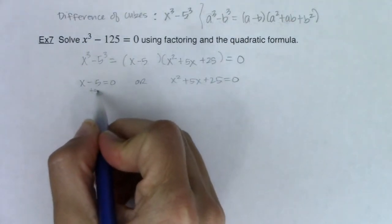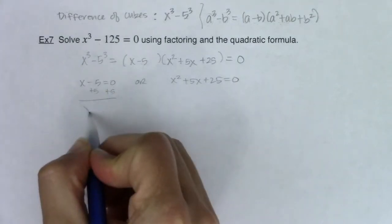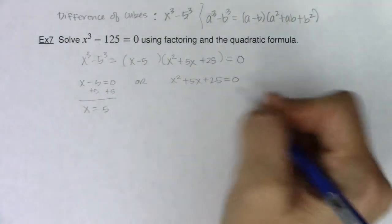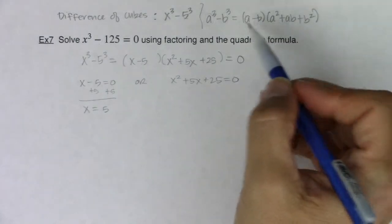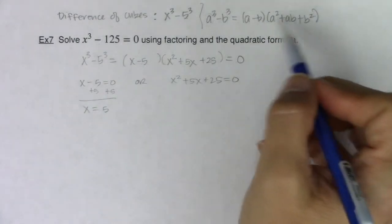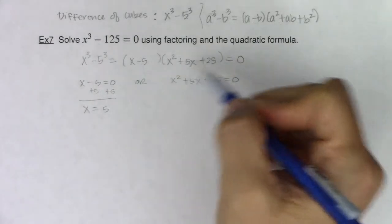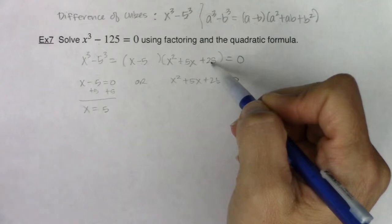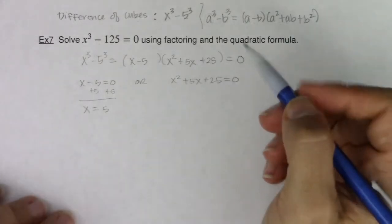Well, this one's not too bad. I'll just add the 5 to both sides, and there's one of my solutions. Here, again, I can't factor it. You've already used your difference of cubes formula, and both of these are prime. There's no way to factor these any further, so I'm going to be forced to either complete the square or use the quadratic formula.